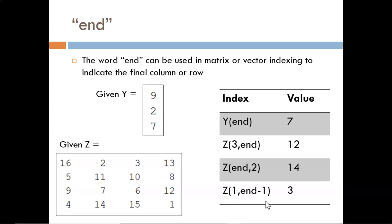Here we see we're looking in the first row. As for the column, we look at one less than the last column. This leads us to the 3.